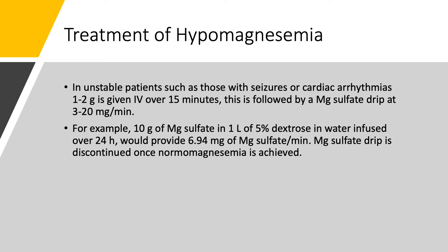A magnesium sulfate drip can be run at 3 to 20 mg per minute. For example, you can put 10 grams of magnesium sulfate in a liter of 5% dextrose in water and infuse over 24 hours, which gives about 7 mg of magnesium sulfate per minute. Once magnesium is normal, stop the infusion. This approach is useful for hungry bone syndrome or refeeding hypomagnesemia — rather than repeated 1 to 2 gram doses, give 10 grams over 24 hours. This is appropriate for patients with severe, ongoing hypomagnesemia.